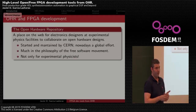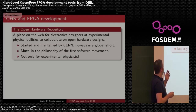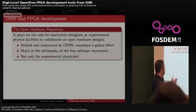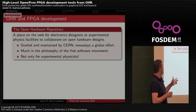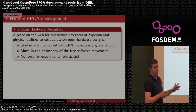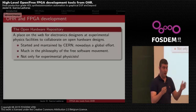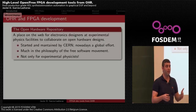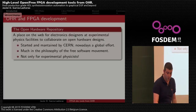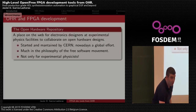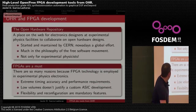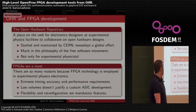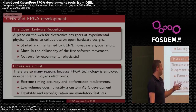This is very much in the philosophy of the free software movement, and of course it's not only for experimental physics — you have a lot of useful resources that you can reuse for other kinds of projects. In the Open Hardware Repository, FPGAs are a must because there are so many reasons why FPGA technology is employed in experimental physics facilities.